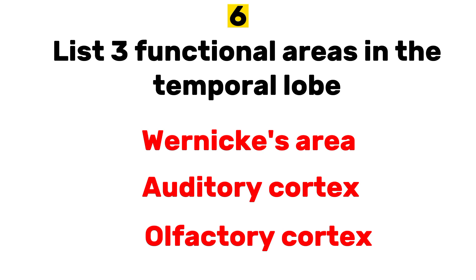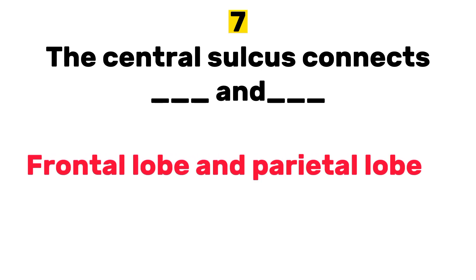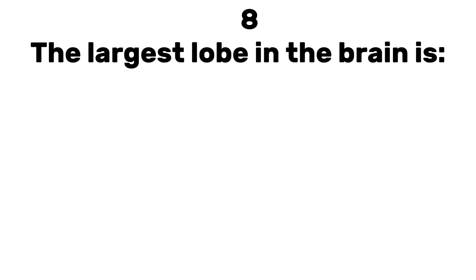Number seven: the central sulcus connects dash and dash. Answer: frontal lobe and parietal lobe.